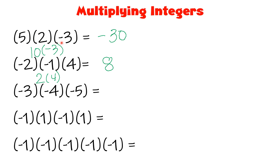The technique in identifying the sign of the product when multiplying more than 2 integers is to count the negative signs. If the number of negative signs is odd — like 1, 3, 5, 7, 9 — your answer must be negative. But if the number of negative signs is even — like 2, 4, 6, 8, and so on — your answer must be positive.